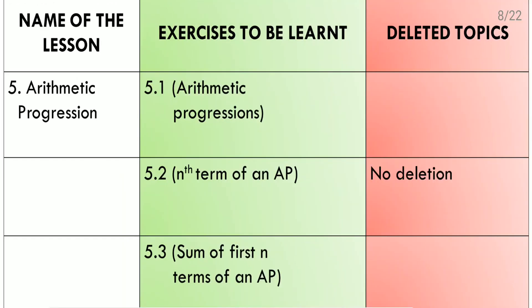Fifth lesson: Arithmetic Progression. Exercise 5.1 covers identifying arithmetic progressions, finding the first term and common difference. Exercise 5.2 depends on the nth term of an AP, and exercise 5.3 is about the sum of first n terms of an AP. All three exercises we need to do — that means no deletion is there from this lesson.